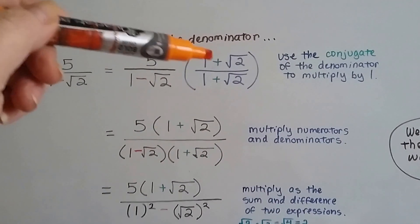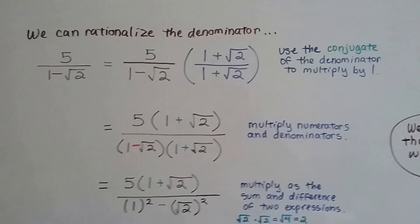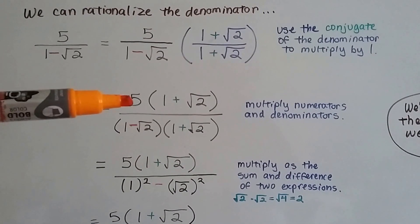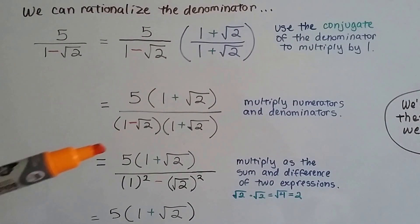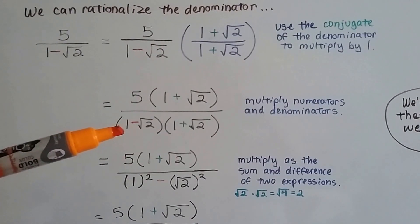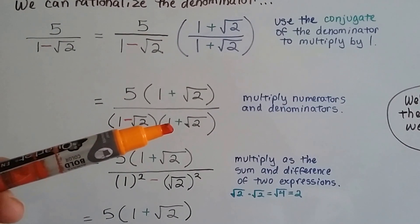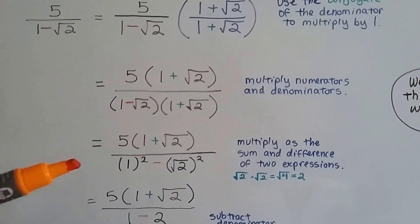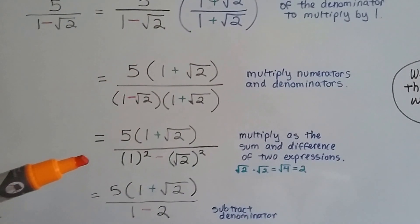And we're going to multiply the numerator by this and the denominator by this. We're going to get 5 times 1 plus square root of 2. And on the bottom, we're going to get 1 minus square root of 2 times 1 plus square root of 2.